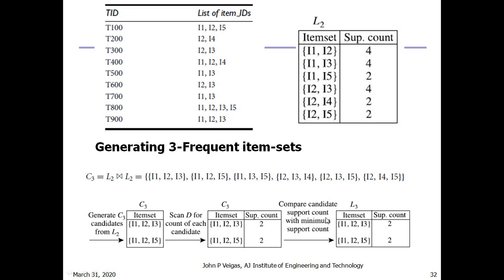Both I1I2I3 and I1I2I5 meet the minimum support of two, so they form the three frequent item sets L3. Moving to the next level, the four item set candidate would be I1I2I3I5, but this occurs only once, not meeting the minimum support. So we get an empty set and the algorithm terminates.